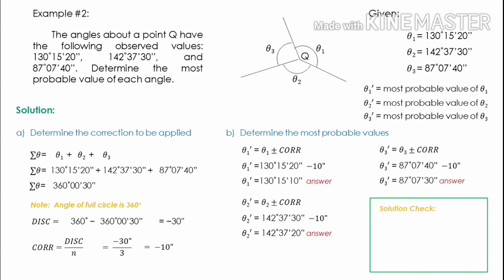Now let us check if our solution is correct. The sum of our most probable angles should equal 360 degrees. So 130°15'10" plus 142°37'20" plus 87°7'30" must equal 360 degrees. By computation, the sum of our most probable angles is equal to 360 degrees. Since the two quantities are equal, the above solution is assumed to be correct.